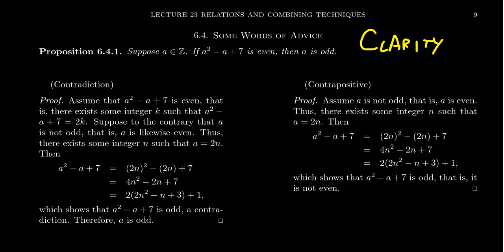Now this is a perfectly fine proof, but it turns out we could do better because notice here, we showed that a squared minus a plus seven is an odd number, but we assumed that a squared minus a plus seven is even. So the contradiction, we got two statements that were, we got a statement and its negation both true, but one of the statements was our assumption. We did nothing with this assumption other than prove its negation, which if that's your proof by contradiction, it turns out you can simplify it by writing it instead as a proof by contrapositive.